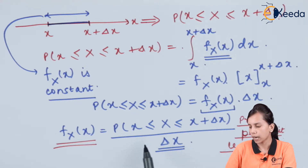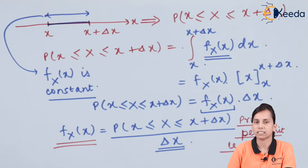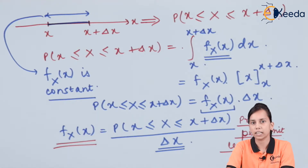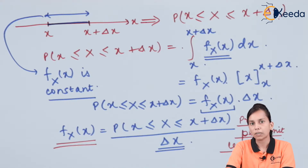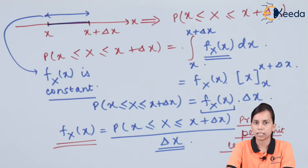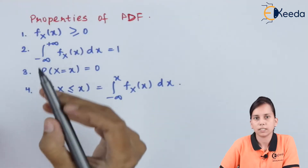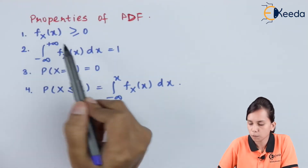As we know that probability is always less than 1, it is not necessary that the probability density function is also less than 1. It may be less than 1, it may be greater than 1. So there is no restriction that the probability density function is always less than or equal to 1. Let us look at the properties of PDF.